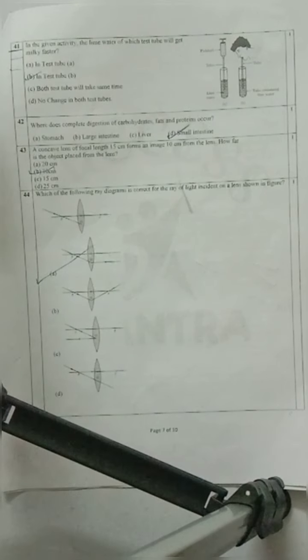Question 42: Where does complete digestion of carbohydrates, fats and proteins occur? Small intestine. D option is your correct option.